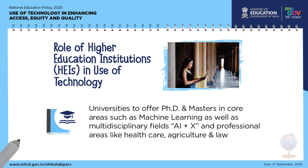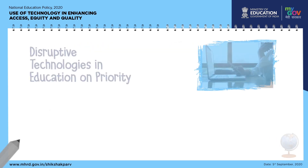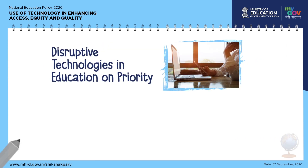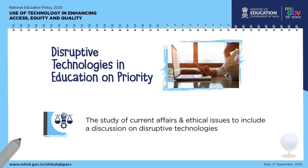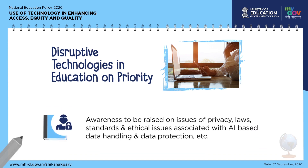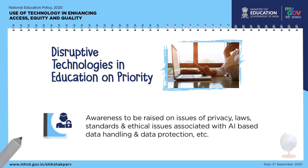Disruptive technologies in education should be addressed as a priority. The education system should help raise awareness about the potentials and effects of disruptive technologies. The study of current affairs and ethical issues should include discussion on disruptive technologies, with awareness raised on issues of privacy, laws, standards, and ethical issues associated with AI-based data handling and data protection.